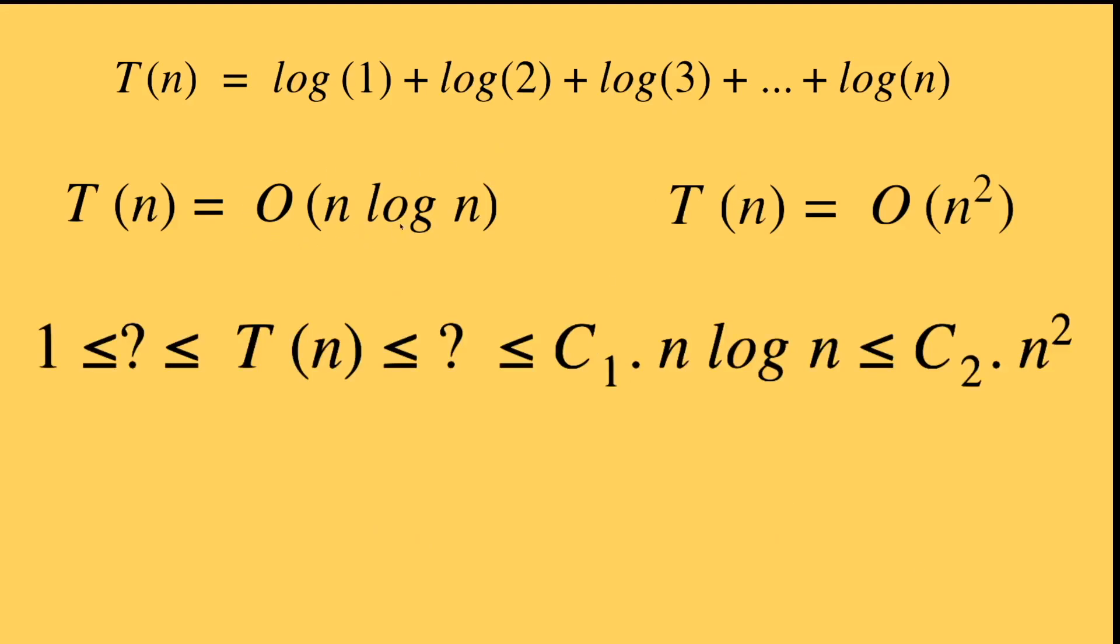Therefore right now our T of n is really we found two upper bounds for it. First one is n log of n. The second one is n to the power of 2. And then we don't know if there's anything tighter than these two. That's our first problem. And then the second problem is that we don't know any lower bound for it. There's this obvious lower bound one, but we don't know if there's any tighter one.